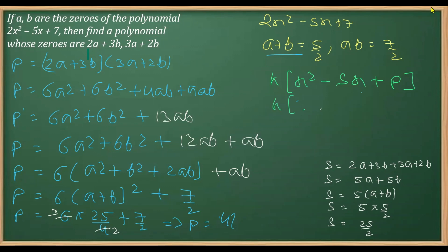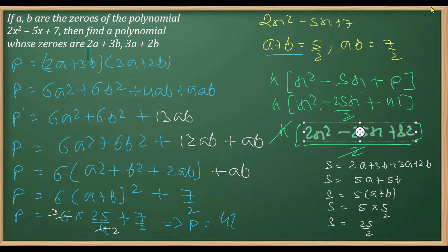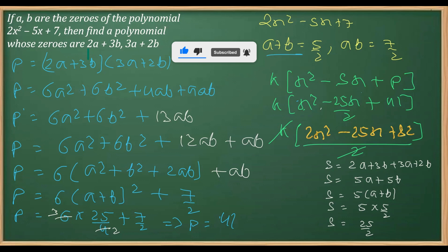Replacing the values in the standard formula: k(x² − (25/2)x + 41). Taking LCM as 2 and simplifying, the required polynomial is 2x² − 25x + 82.